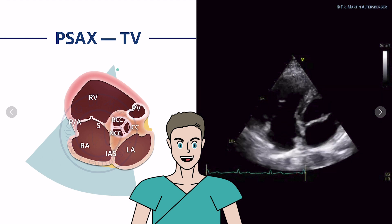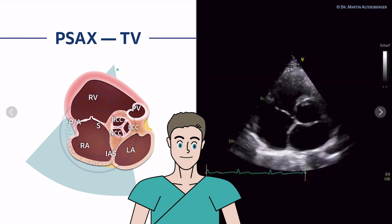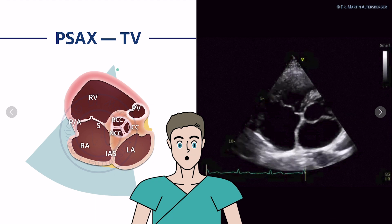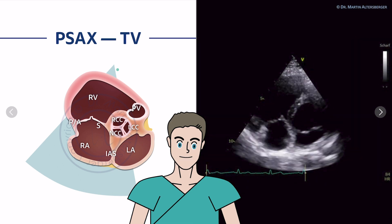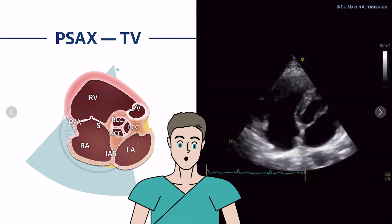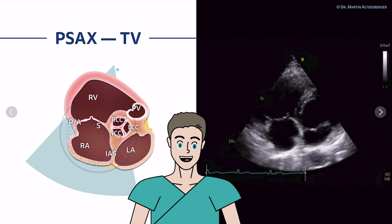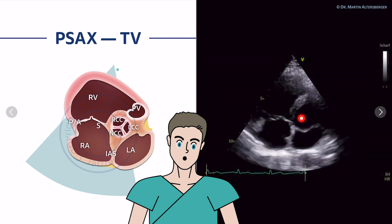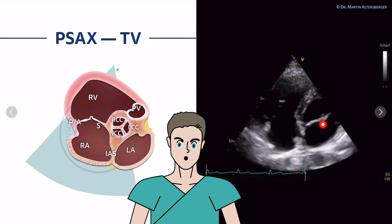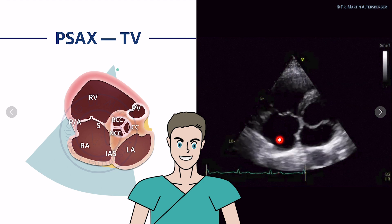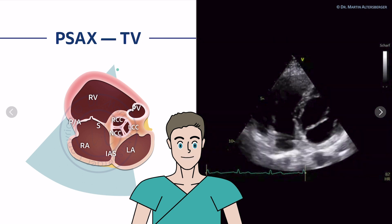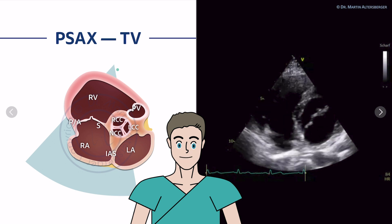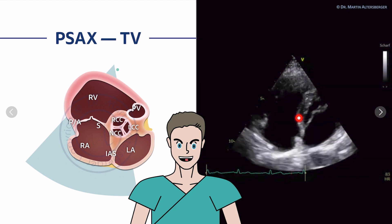The next view is a short axis view focusing on the tricuspid valve. To achieve this, move the transducer a little more lateral — away from the sternum — and tilt it in. Keep in mind that the lungs shouldn't block the field of view, and this may be a slightly oblique view. You can see parts of the left ventricle, the mitral valve, the left atrium, the right atrium, the interatrial septum, and the tricuspid valve distinctly in this view.